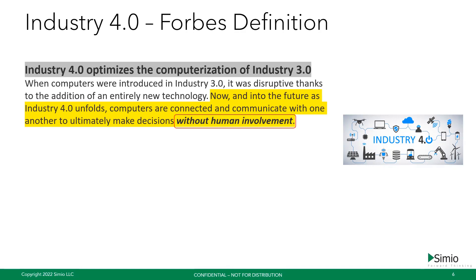Today, factories cannot run without humans — not only to do the work, but to figure out what to do next. Although you might think there are very smart systems, AI, and wonderful technology, today when a schedule is produced to run a factory, it is a human in Excel who does so. It boggles your mind, but it's absolutely true: 95% of any semi-complex or complex factory you walk into, if you find the planner and ask what software they use to create the schedule, the answer will be Excel.